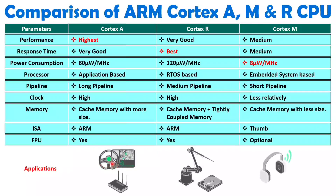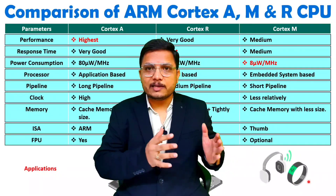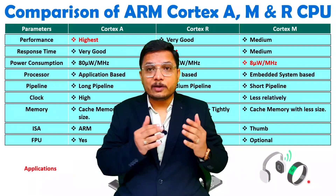In terms of applications: Cortex-A targets rich applications such as mobile phones, computers, tablets, and IP routers that require high performance. Cortex-R is used in real-time applications like robotics and hard disks. Cortex-M is used in embedded system applications such as headphones and similar low-power devices. This is how the three different ARM processor series serve different industries.